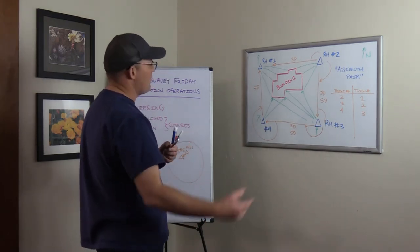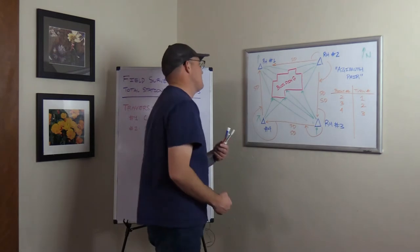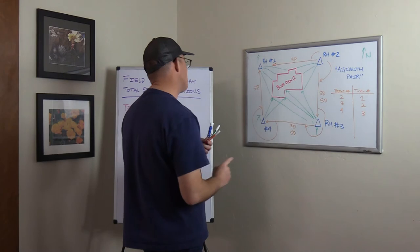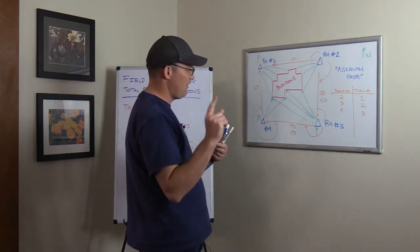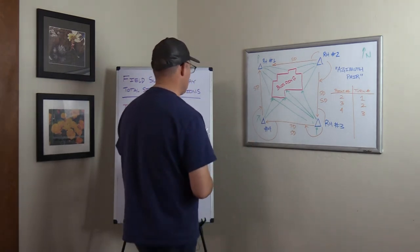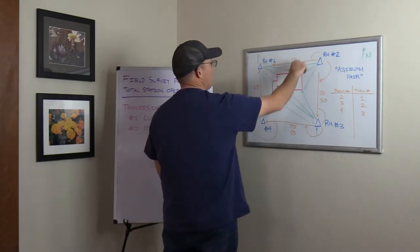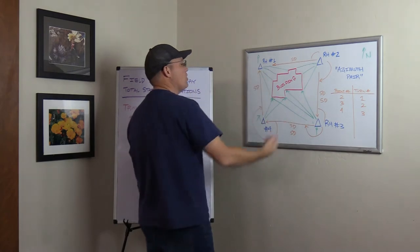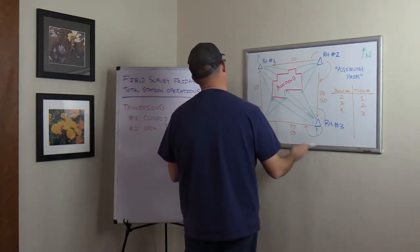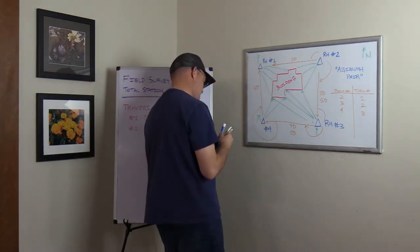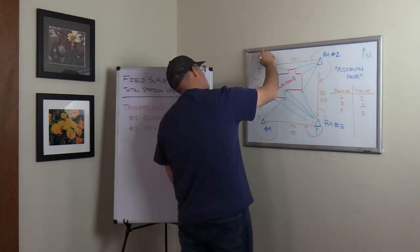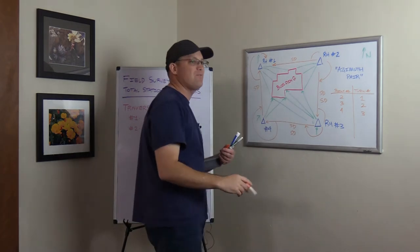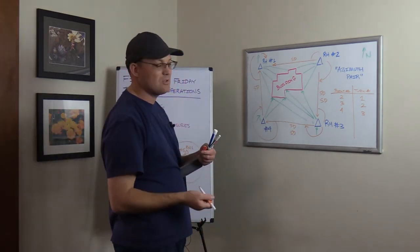Now you might think, 'Okay, Landon, I did that extra setup at four now so I could close out to one — I'm done, right?' No, you're not done. To effectively close out the traverse, you need to know what this closing angle is. So we've measured these three angles, but we haven't measured this angle yet, and we want to know what our angular misclosure is. So you've got an extra setup at one — we're going to turn this angle to the right. Now we've got four angles on a four-sided figure and we can calculate our angular misclosure.